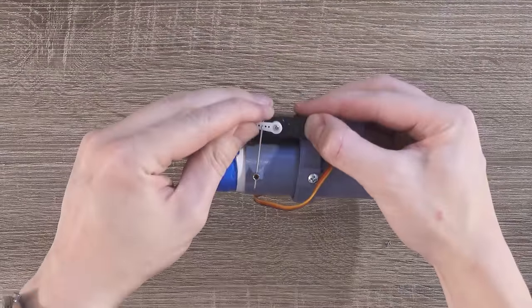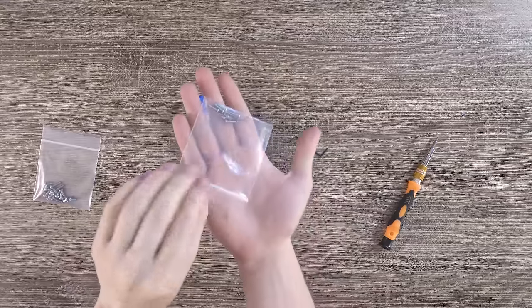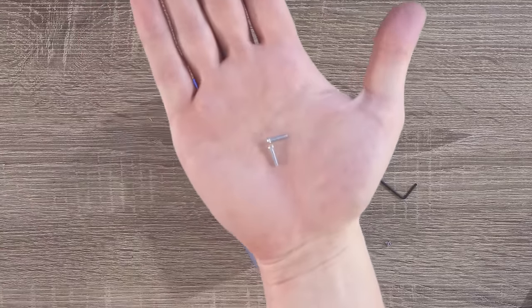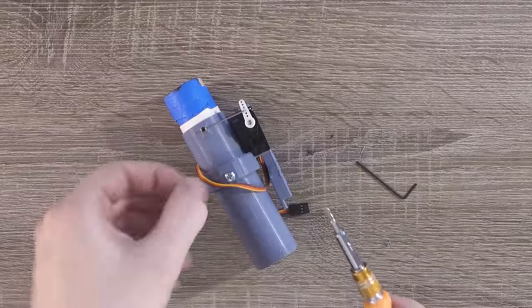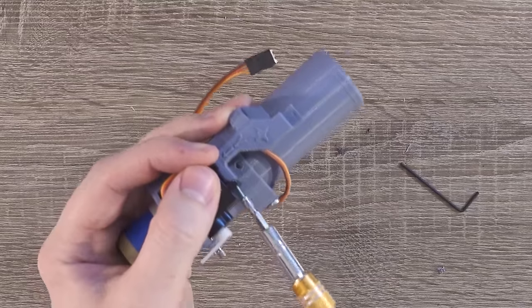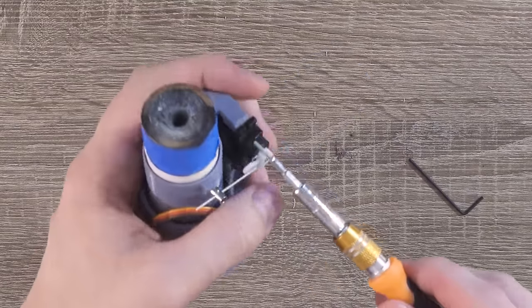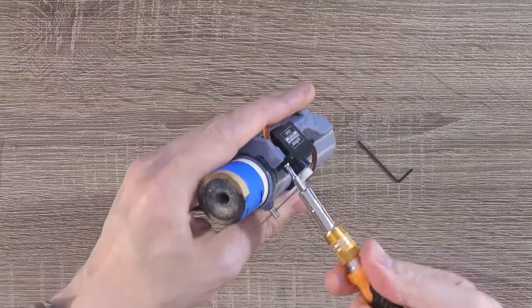Straighten out the servo just a little bit, then grab two of the M2 screws from the small parts bag. Using a small screwdriver, secure the servo into the inner gimbal using these two screws. There's one hole at the top and one at the bottom.